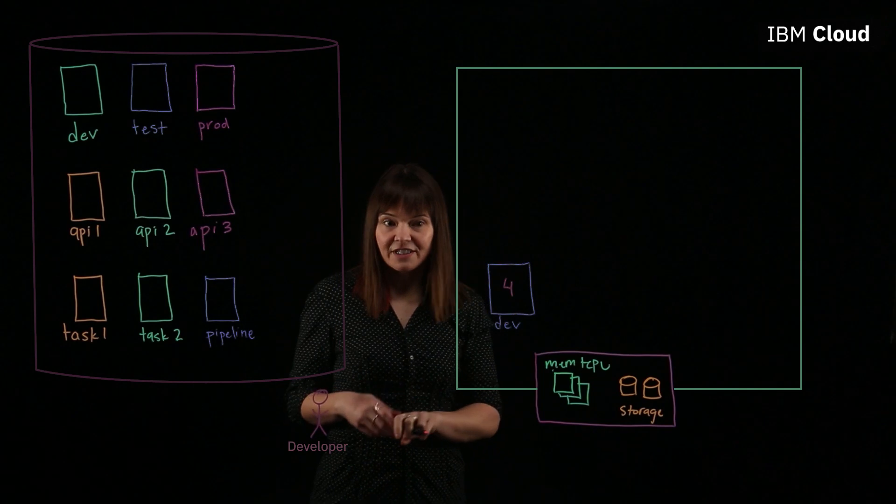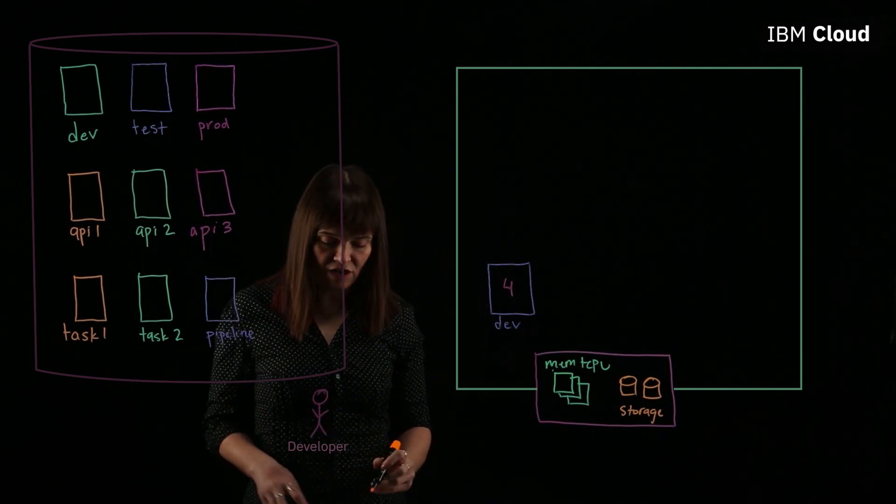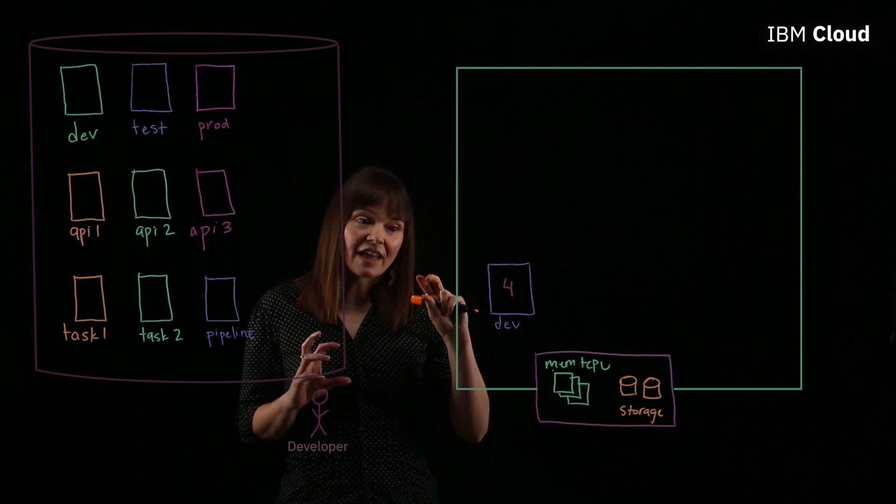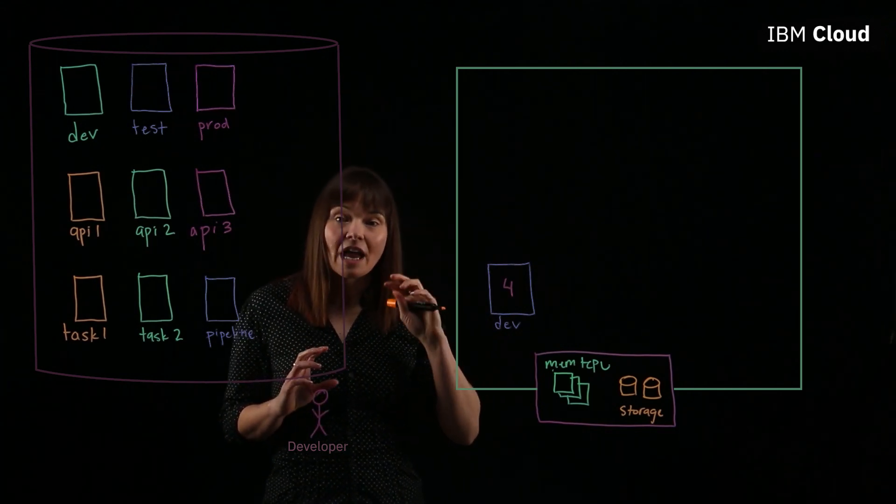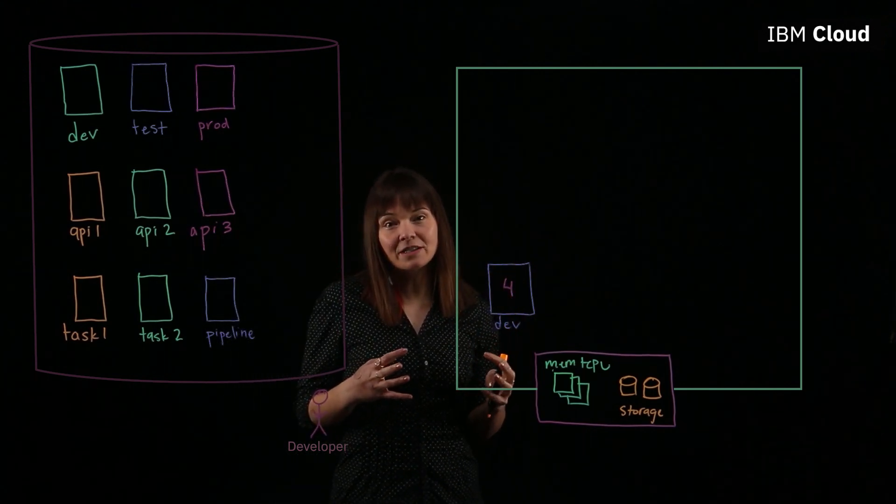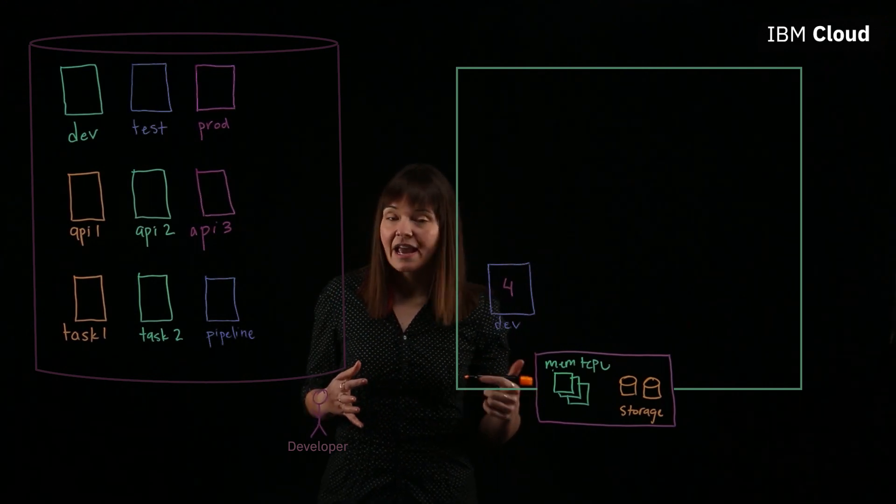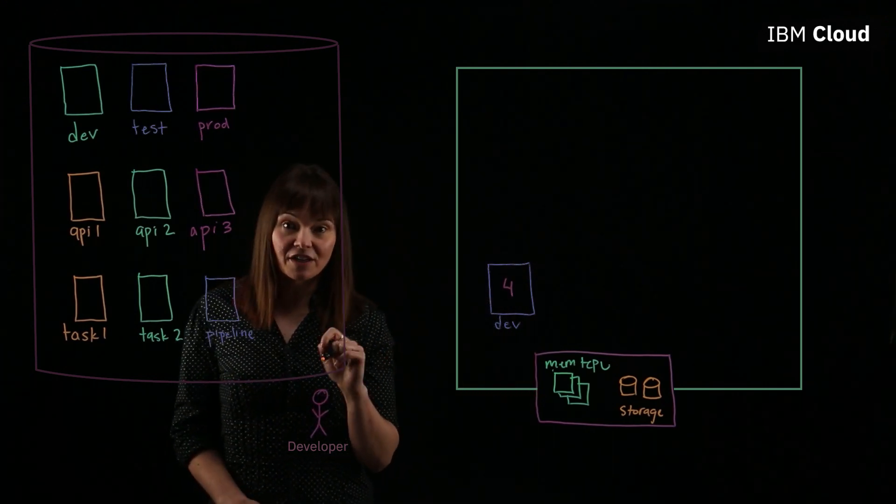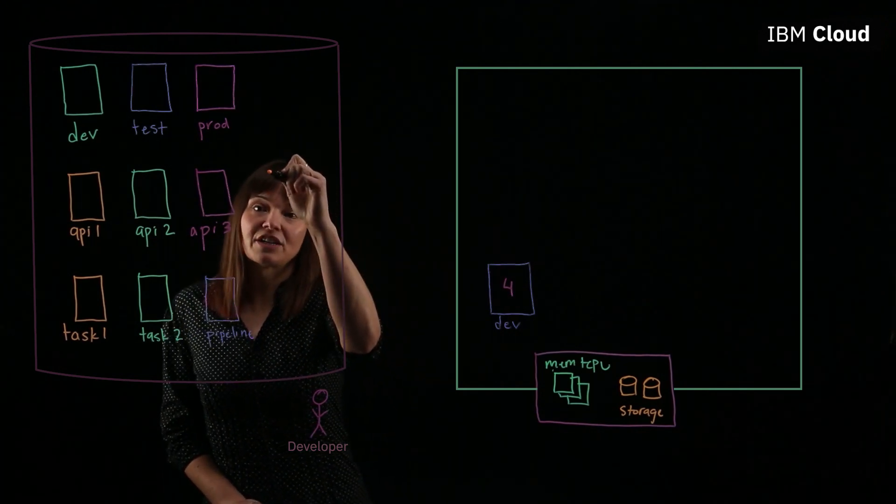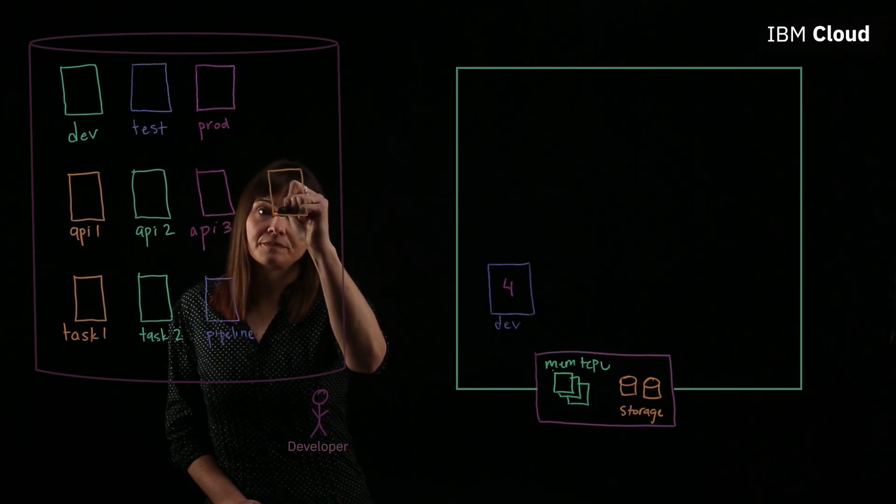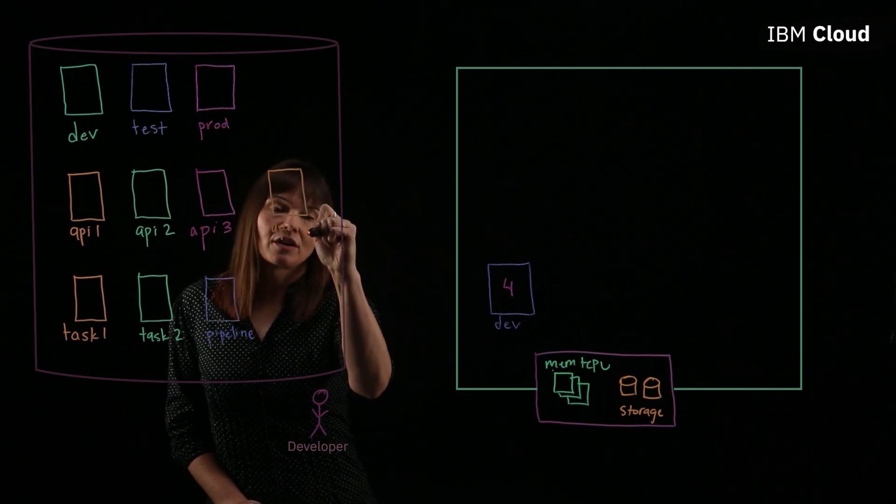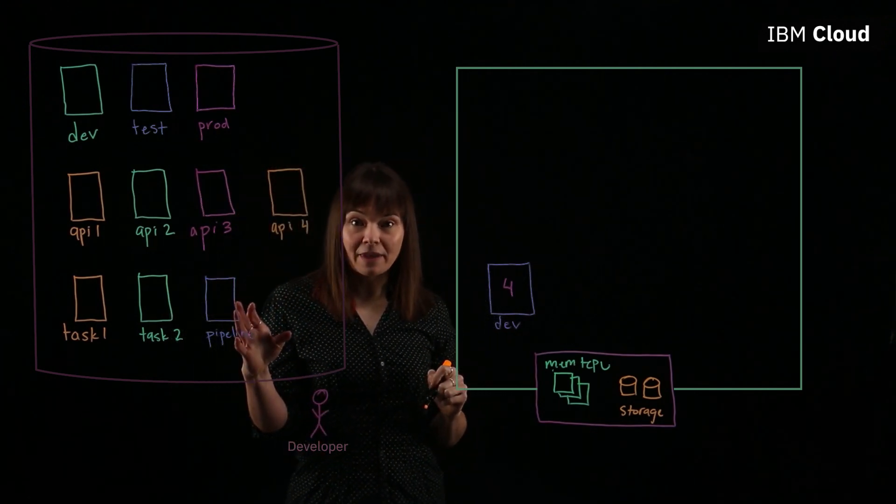So let's say the developer feels like API 4 is ready to go. What we want is a pipeline build that's going to take that API 4 and promote it all the way up to production. So that pipeline build is going to need to get triggered. In this case, we'll trigger it by having our developer, when the API is ready, push that definition file into our source control. That's going to trigger a webhook, which is going to trigger our pipeline build.